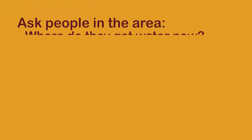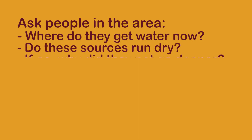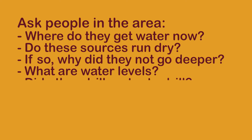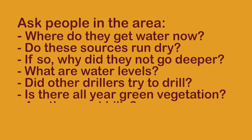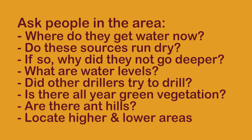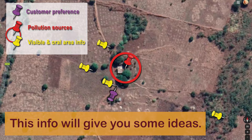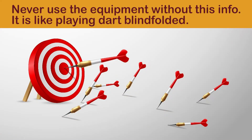Ask people in the area: where do people get water from now? Do these sources run dry, and if they dry up, why did nobody dig deeper? What are water levels in these wells? Did other drillers try to drill here and what was their finding? Is there all year round green vegetation? Are there any ant hills in the area? Locate higher and lower areas in the landscape. Answers to these questions will give you some ideas where to measure. Never start using the electrical equipment without this important information — it is like playing darts blindfolded.